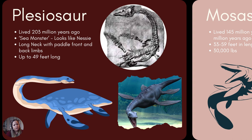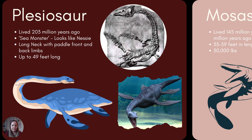The plesiosaur lived 203 million years ago. They are known as the sea monster — they look like Nessie, the Loch Ness monster. The interesting thing about their long neck is that it was actually fairly rigid — it had a full vertebrae down its neck, which meant it wasn't a flimsy jello-like feature, but a very stiff neck, kind of like a giraffe's. These guys reached up to 49 feet long.